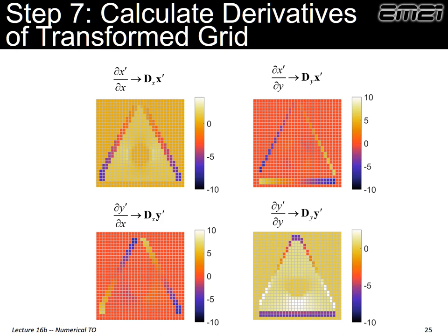To build our Jacobian, we need derivatives of our transformed coordinates. We go back to our transformed coordinates and use the derivative matrices to perform numerical differentiation. Working in two dimensions, we need four derivatives: the x-derivative of the x-coordinates, the y-derivative of the x-coordinates, the x-derivative of the y-coordinates, and the y-derivative of the y-coordinates — four 2D arrays, just four lines of MATLAB code. We've already constructed those derivative matrices, and at the end of our spatial transform we have our transformed coordinates x-prime and y-prime.